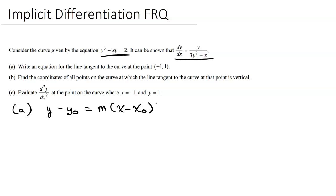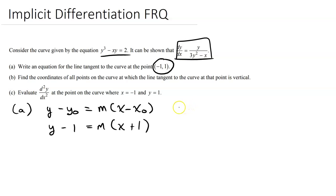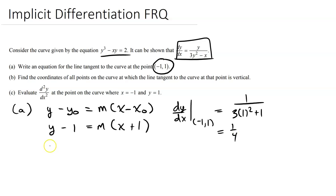From writing that out, it starts helping me because I see I have a point, so I can actually start plugging that in. This would be plus one because it's minus minus one. Then I just need M — the slope. Luckily, they gave us the slope formula, the derivative. We just need to plug it in. One divided by three times one squared minus negative one gives us one fourth. So I plug in one fourth and we are done.